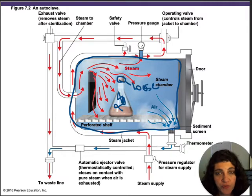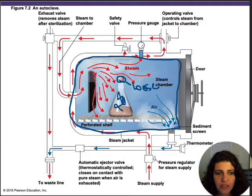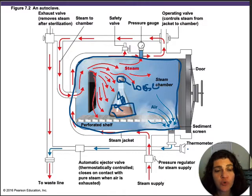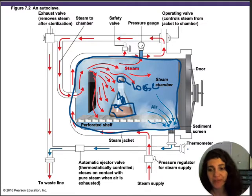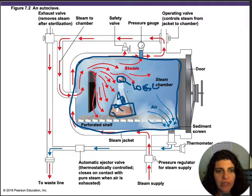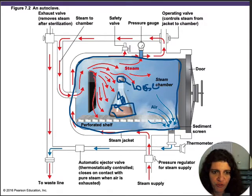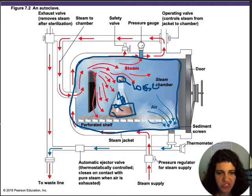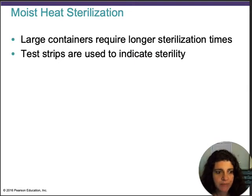If the cap is not loose, the steam doesn't get inside the bottle and it won't sterilize properly. Time is also related to volume — depending on the volume or size of what you're sterilizing, you need to apply different temperatures and different times. There are programs on the autoclave display that you pick depending on the volume and amount of what you're sterilizing.